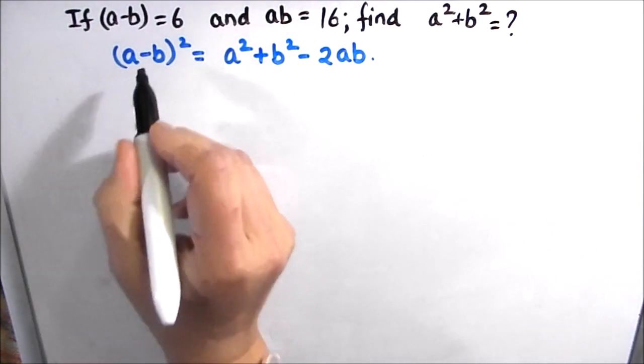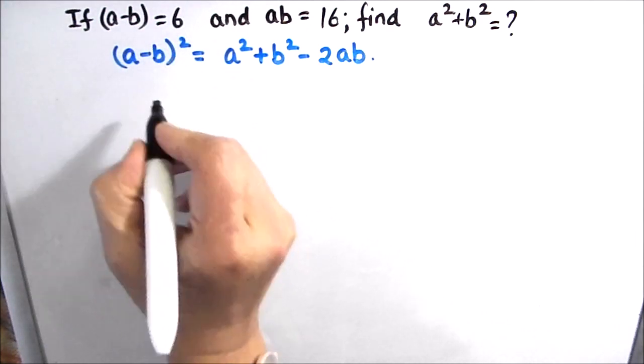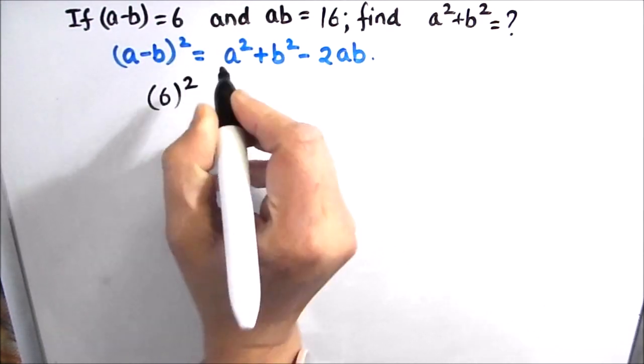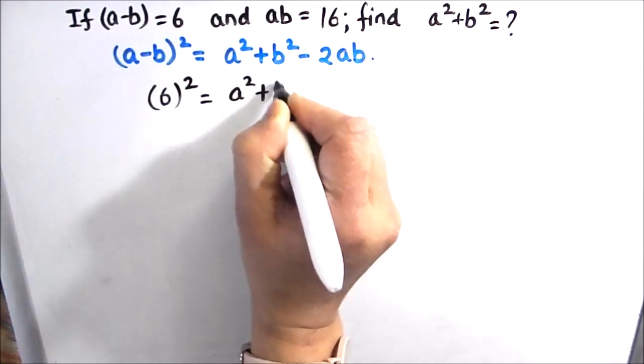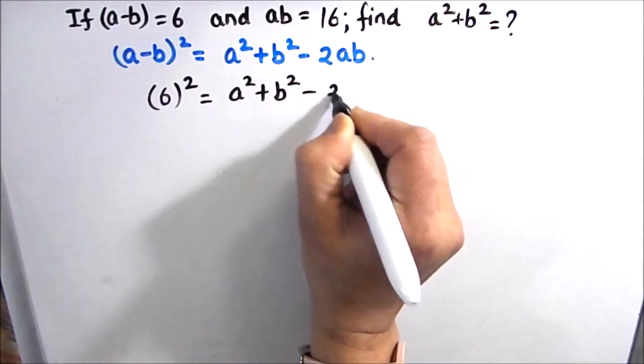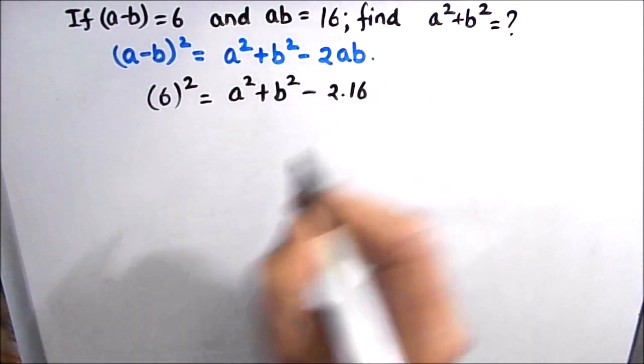Now we are going to substitute the values in the identity. So (A - B)² is equal to 6², that is going to be 6² = A² + B² - 2 times AB is given as 16. So 2 times 16.